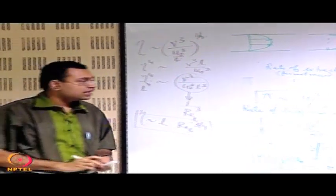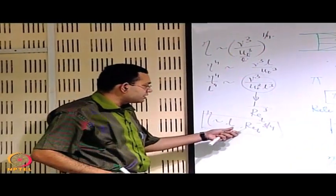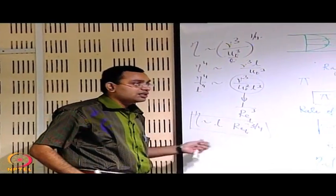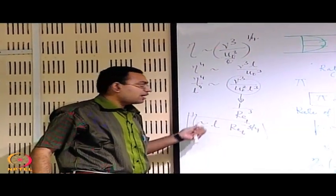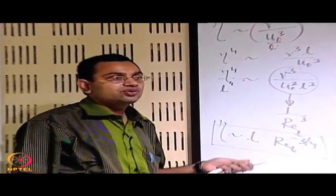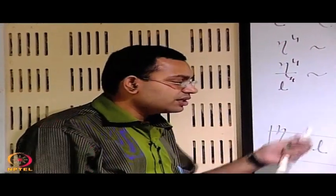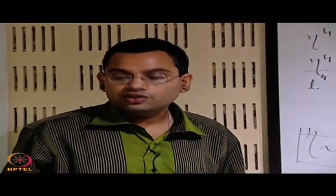We are relating the smallest eddy length scale with the system scales. In the next lecture, we will see what the approximate magnitudes of these length scales and velocity scales are, using some practical numbers.